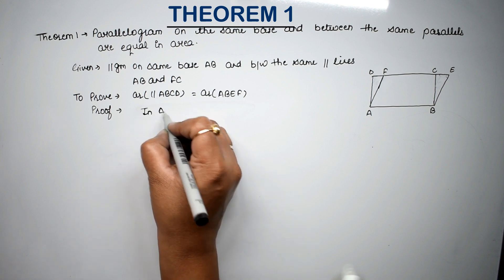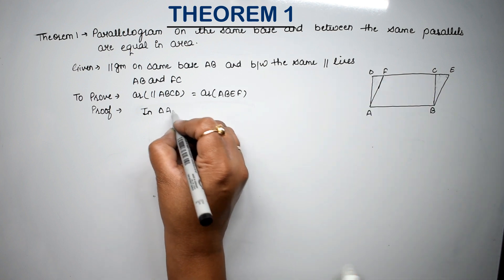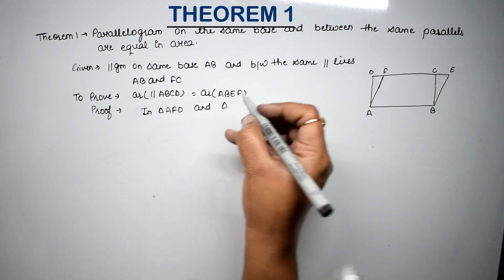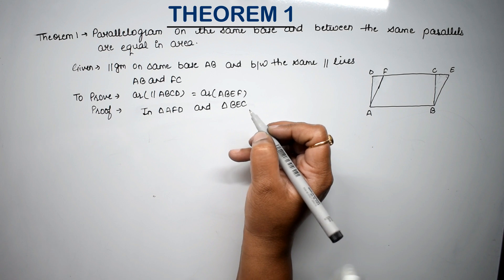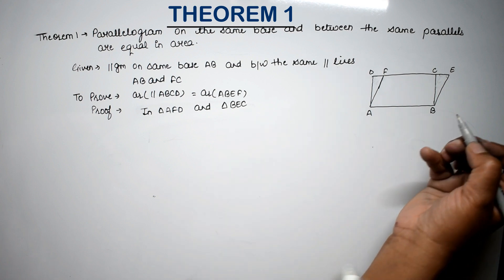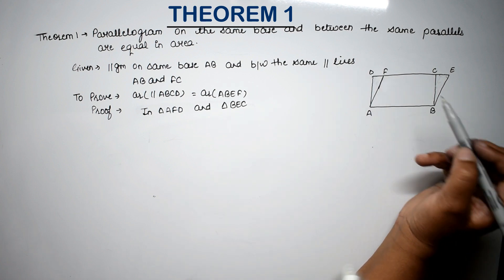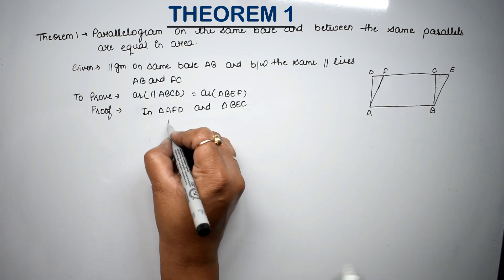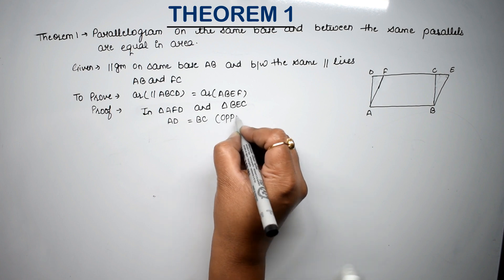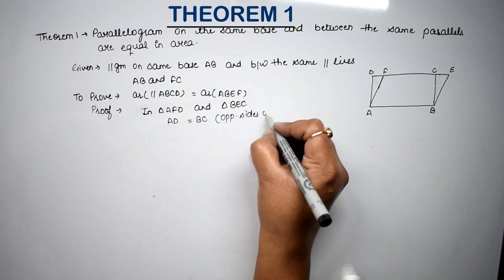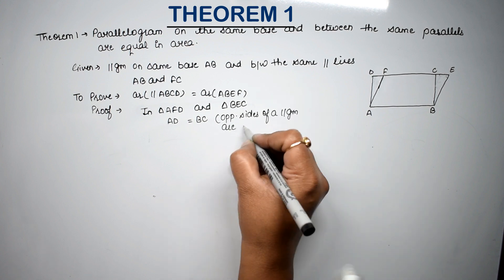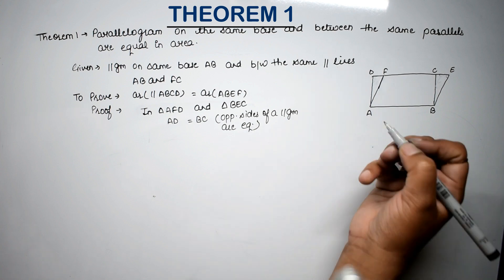In triangle AFD and triangle BEC. Right friends? Now to prove congruent, we need to prove three things. Now what do we prove first? AD is equal to BC. AD is equal to BC. Why? Because opposite sides of a parallelogram are equal. Opposite sides of a parallelogram are equal. Right?